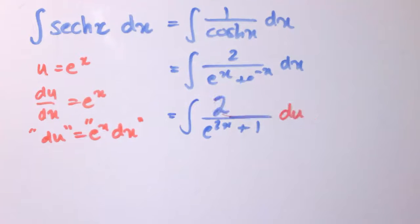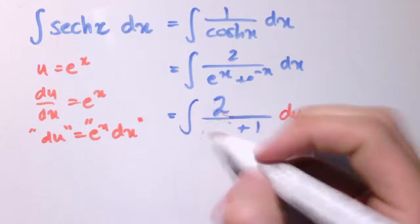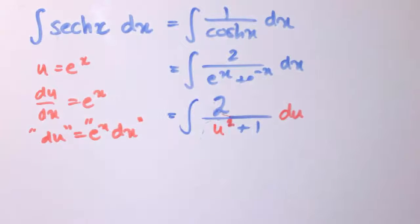So actually, this whole e^x dx part here, we can replace with du. And then e^(2x), well that's e^x squared. So this is just u^2. And we've now got an integral in u.